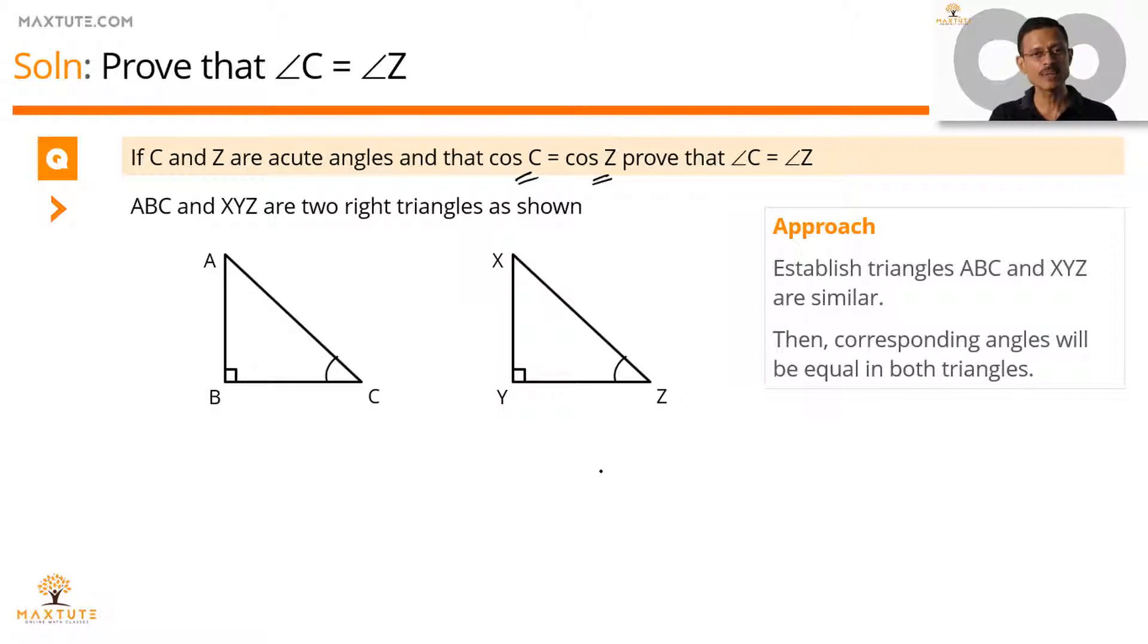Let's get started. The data given to us is cos C and cos Z. Let's mark those sides correspondingly for angle C and angle Z. BC is the adjacent side to angle C and AC is the hypotenuse, relevant ones I am marking. Similarly, to angle Z, YZ is the adjacent side and XZ is the hypotenuse.